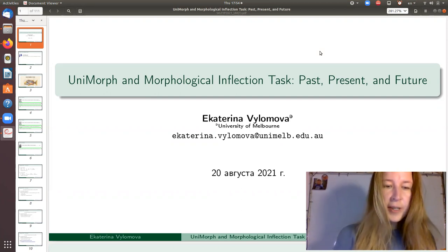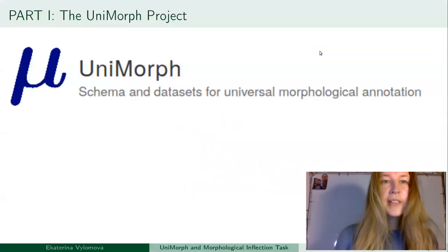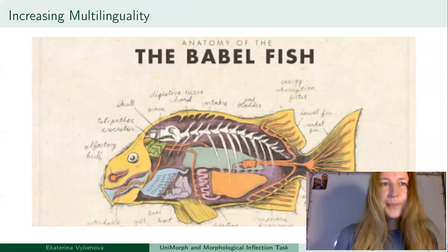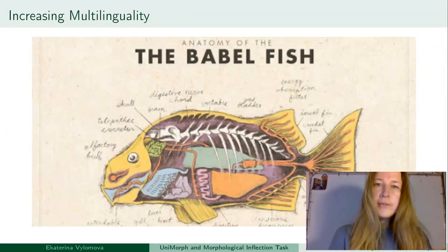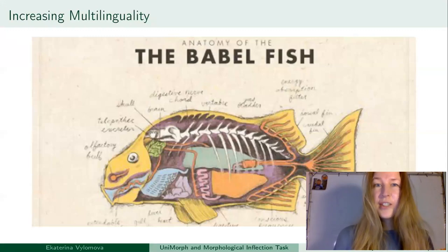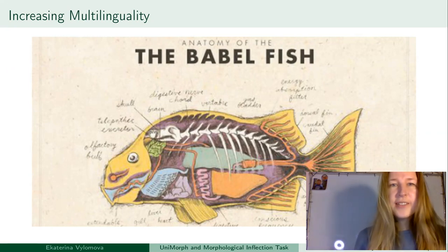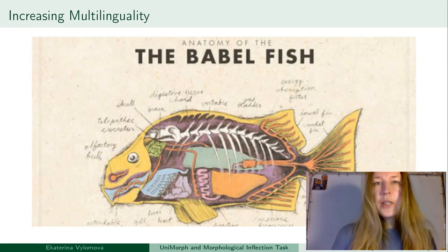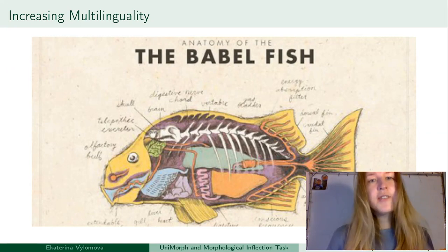This is the first part of the talk in which I will try to provide some motivation for the Unimorph project. The ultimate goal of NLP technology is to bring it to as many languages as possible so we can perform machine translation between any languages, speech recognition, and many other tasks. In addition, we would like to use this technology to study and document languages.